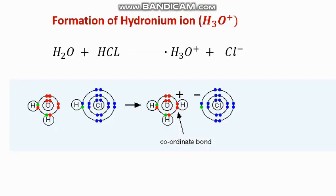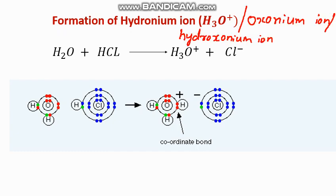Next, we will move on to the formation of the hydronium ion. When hydrogen chloride dissolves in water, we get the H₃O⁺ hydronium ion and Cl⁻ ion. The hydronium ion can also be called the oxonium ion or hydroxonium ion.